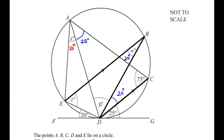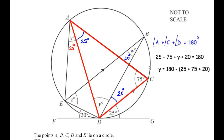Now let us focus on finding angle Y. For that we concentrate on triangle ADC. In this triangle, angle C is given as 75 degrees, angle A we found as 25 degrees, and angle D is the total of Y and 20 degrees, that is Y plus 20. Using the angle sum property of the triangle: angle A plus angle C plus angle D equals 180 degrees. So 25 plus 75 plus Y plus 20 equals 180. Taking 25, 75 and 20 to the other side, we get Y equals 180 minus 120, which gives Y equals 60 degrees.